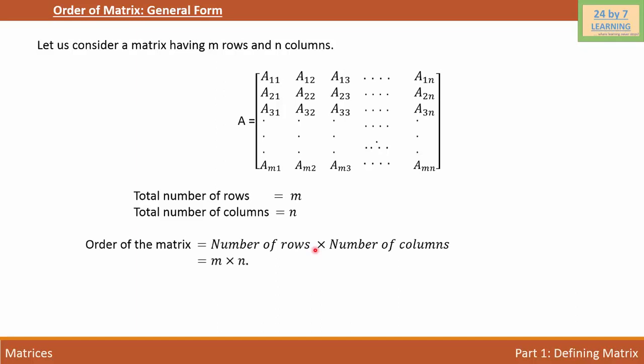Again, if we want to find the total number of elements of a matrix, we can simply multiply the number of rows with the number of columns. So our number of rows is M and the number of columns is N. So the total number of elements of matrix A is M×N.